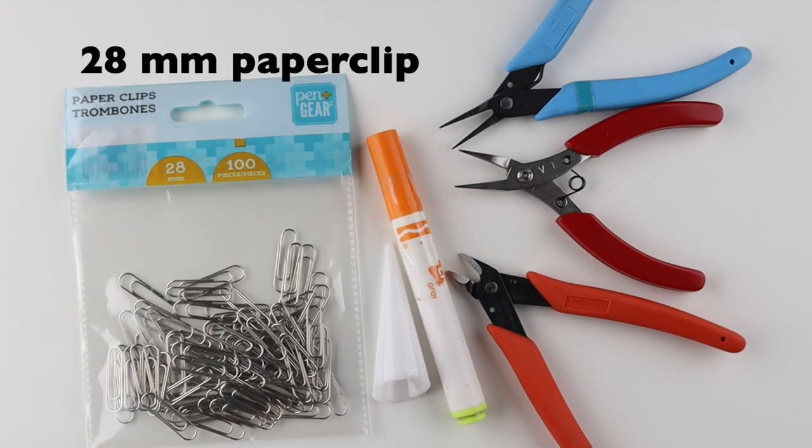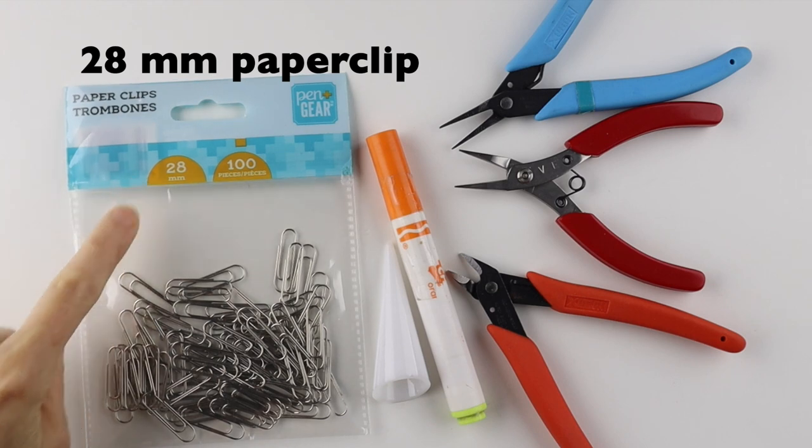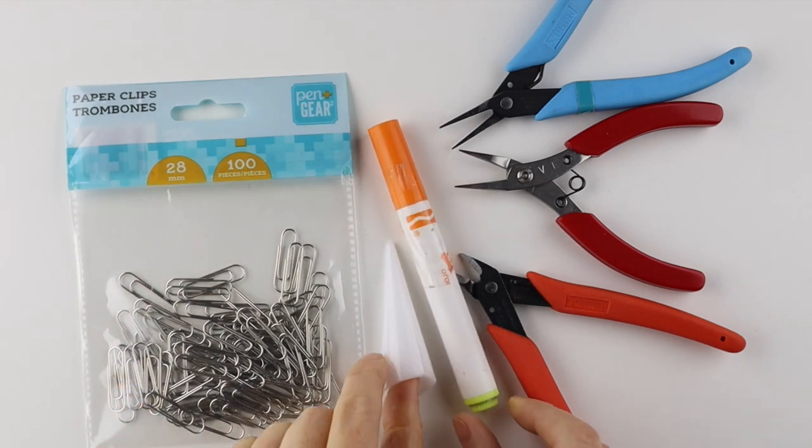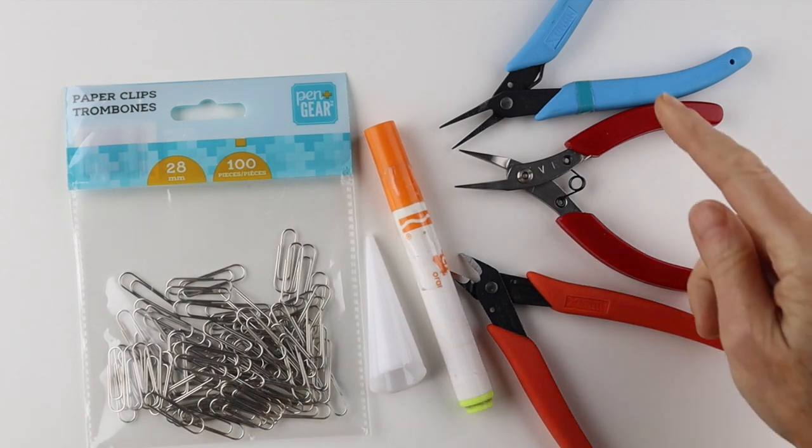For the paperclip rings, I use the 28mm regular sized paperclip. You need a round form, so a marker or a ring cone, and your tools.